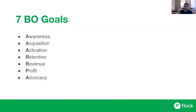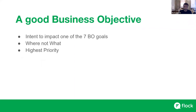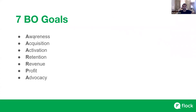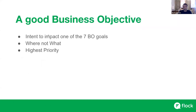I love this framework because it creates a bucket for deciding what is the priority for us and what we're going to focus on as an organization. So the rules of a good business objective: first, it has an intent to impact — and I think this word is important. A good business objective is stated as an intent to impact one of these seven BO goals. So I have an intent to either improve awareness, improve activation, or whatever it is. It's always an intent to impact one of the seven BO goals.